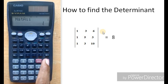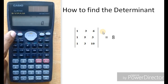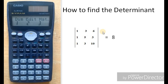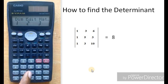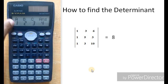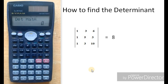After entering all values, press AC. Then press Shift and 4 again, move to the right and press button 1 to find the determinant. Press button 1, then again press Shift and 4, enter the matrix function, and press button 3. Choose matrix A by pressing button 1, then press the equals button to get the determinant value directly.